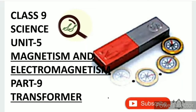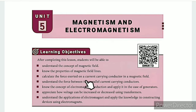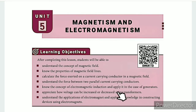Greetings from SS Class 9 Science, Unit 5: Magnetism and Electromagnetism, Part 9: Transformer. The lesson-level learning objectives are: understand the concept of magnetic field, know the properties of magnetic field lines, calculate the force exerted on a current-carrying conductor in a magnetic field, and understand the force between two parallel current-carrying conductors.